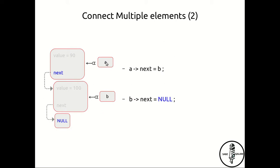How do we connect these two? It's fairly easy. You simply see that a->next has been assigned b, and b->next has been assigned as null. So a->next points to b, b->next points to c, c->next points to d, and d->next points to null. That way you can combine multiple elements.